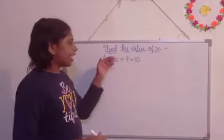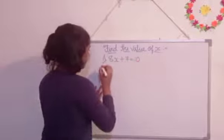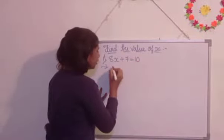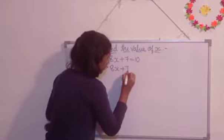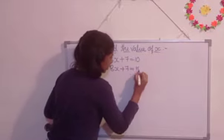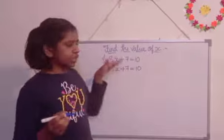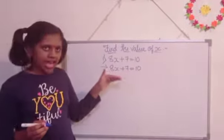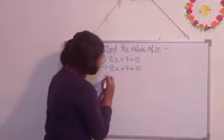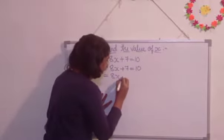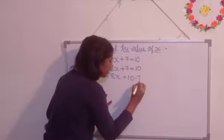First, we are going to write the question as it is. Here, 8x plus 7 is equal to 10. First we write the question as it is. Next, we are going to write 8x is equal to 10 minus 7 here.